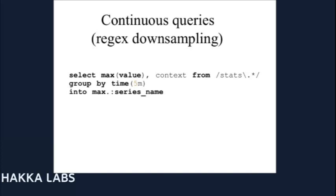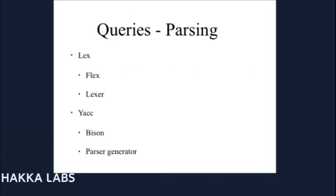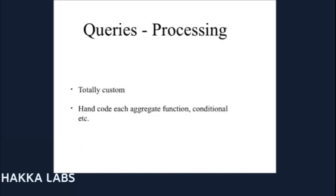Now we're going to get into the underlying details — what things we use to put all this together. The query language looks like SQL but isn't quite. We used Flex and Bison, which are tools people use for building compilers and programming languages, to build a lexer and parser for our query language. The query processing code is totally custom — we wrote it from scratch. Everything is written in Go, except for Flex and Bison which generate C code that we wrap in Go objects for the query stuff. We had to hand-code all the aggregate functions and conditional logic.